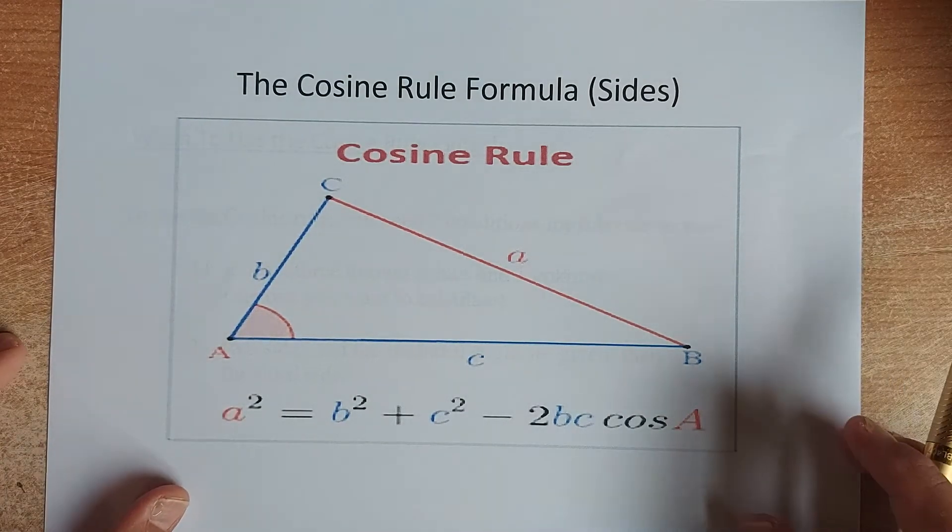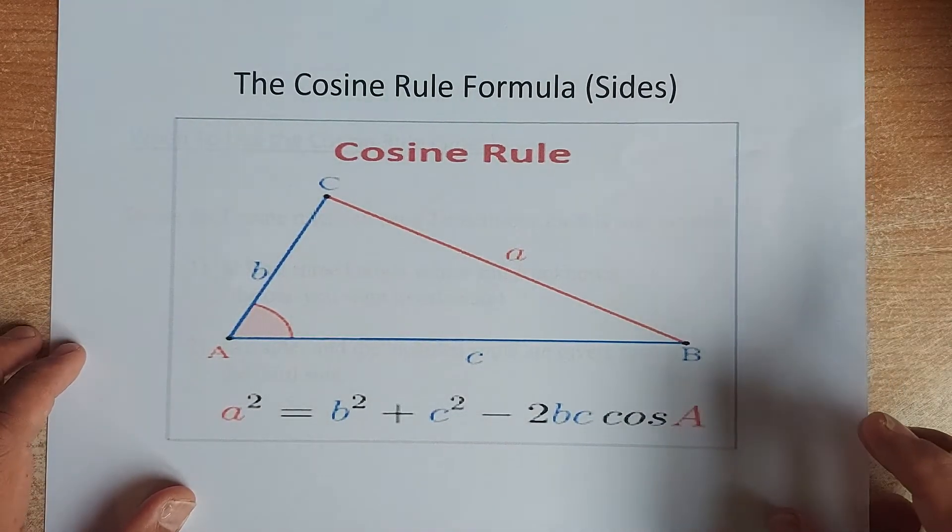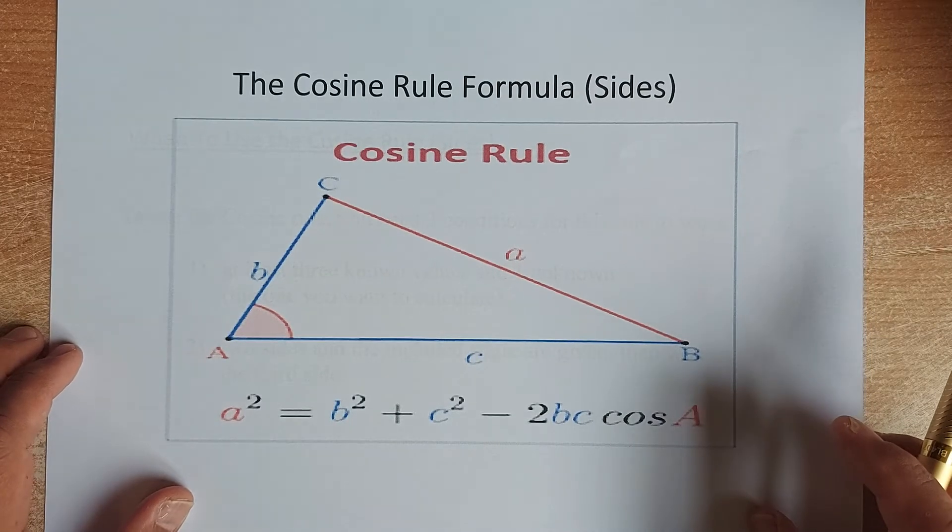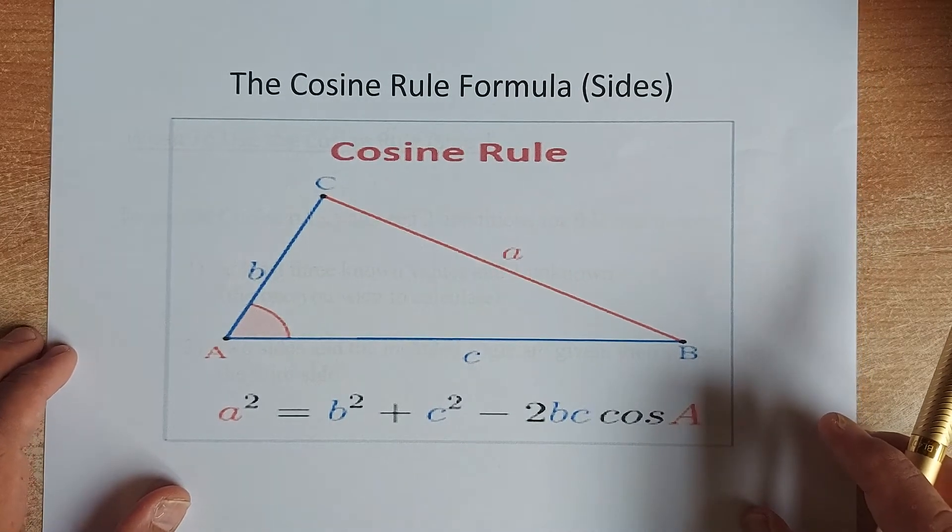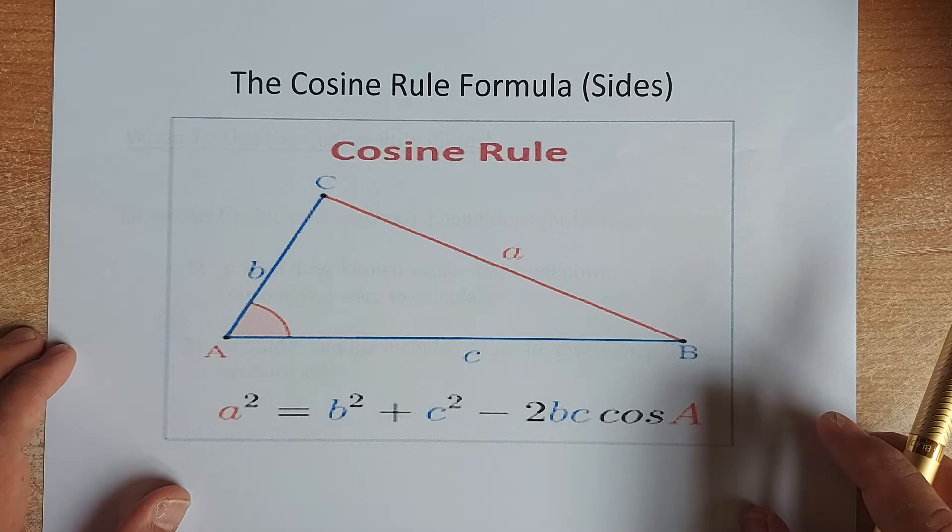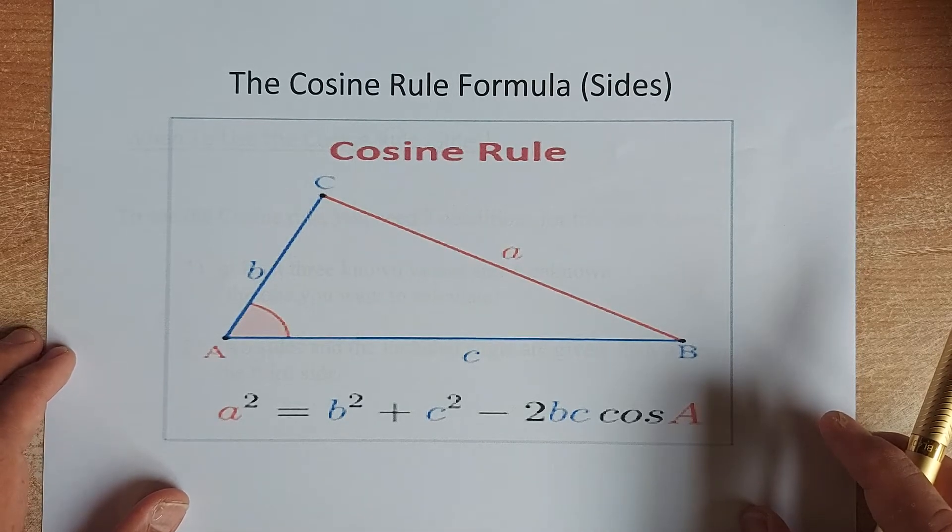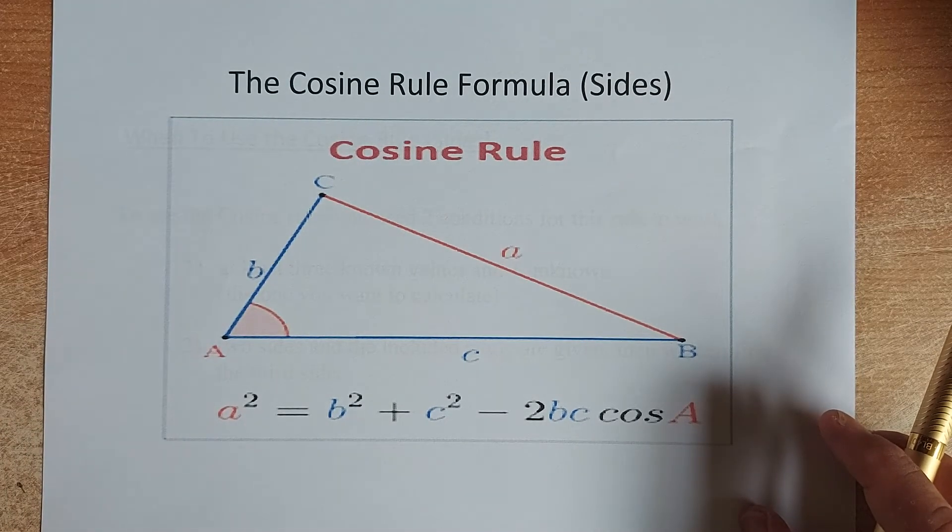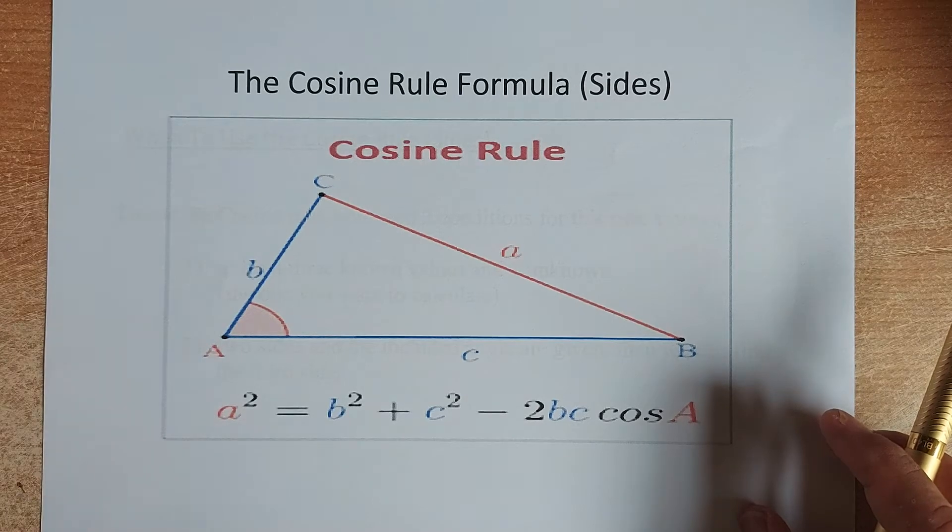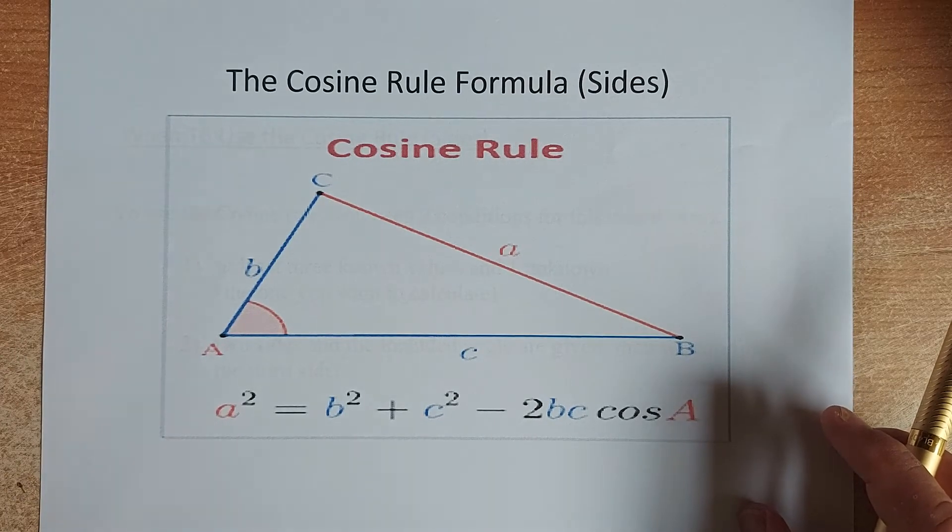Before we do this method, if you cannot do the sine rule, then you should try to do the cosine rule. There are two rules you need to comply for the cosine rule to work. First, you must have three known values and one unknown value.